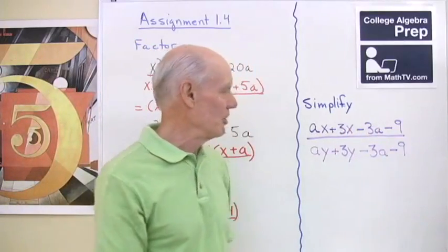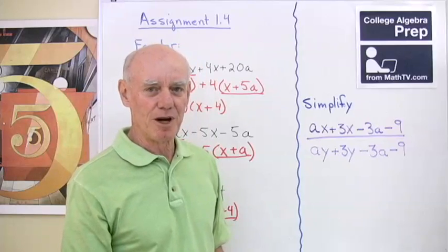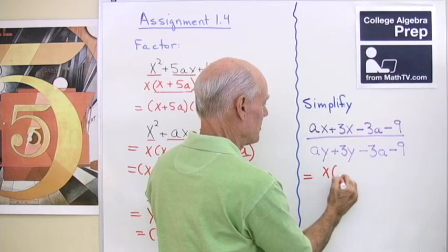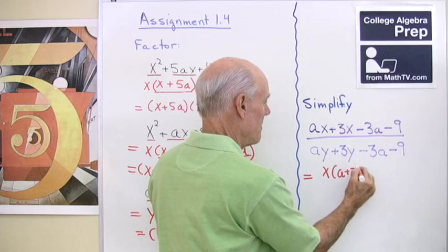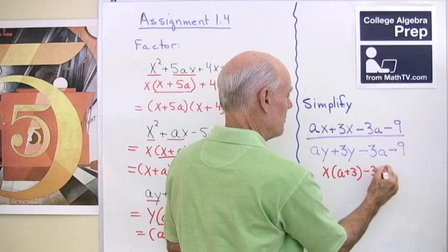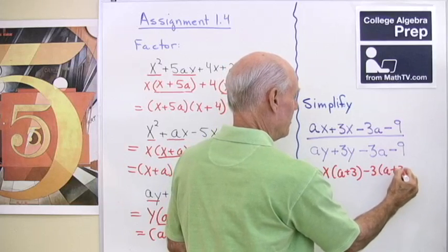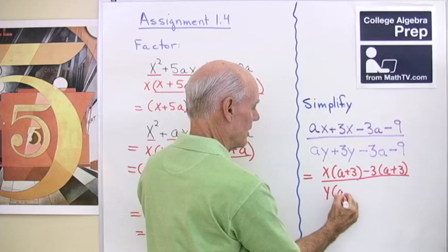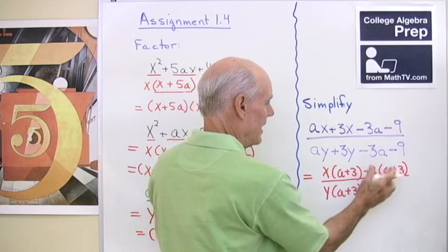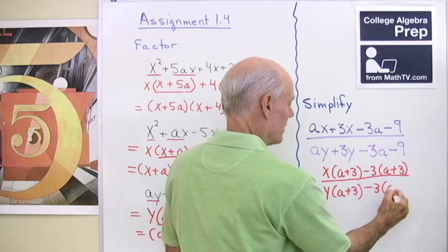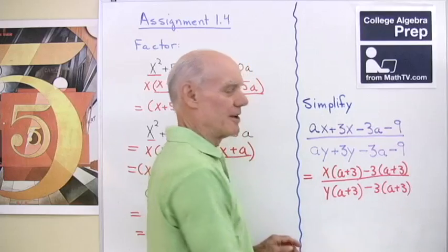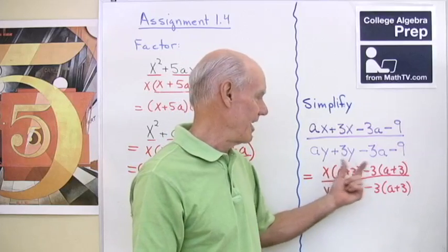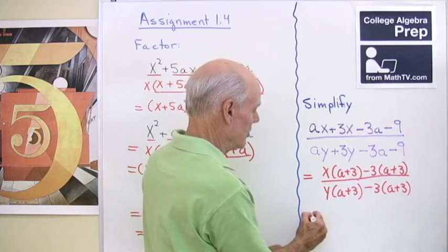Okay, here is a reduced to lowest terms, factoring by grouping problem with a rational expression, so let's just go ahead and do that. I'll take an x out of those two terms, what's left is a plus 3. I'll take a negative 3 out of those two terms, what's left is a plus 3. And in the denominator, I'm going to take a y out of those two terms, what's left is a plus 3. And then I'm going to take a negative 3 out of those two terms, and what's left is a plus 3. Now, it's not time to do any dividing yet, because I can only divide out common factors. I can't divide out terms, so I have to continue to factor.